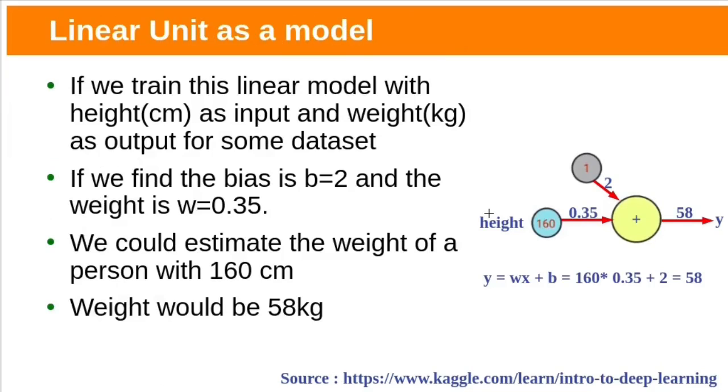To understand the working of artificial neuron, let us create a model with single neuron. Usually single neuron will not be a model, it will be part of large neural network. With single neuron we can build linear models. Linear model cannot solve complex problems. This is our model with single neuron. If we express this model as mathematical function, it will be y equal to wx plus b. If we train this model with dataset containing person heights as input and weights as output, heights are in centimeters and weights are in kilograms. Training means neuron will adjust its weight and bias values for given set of input and output values.